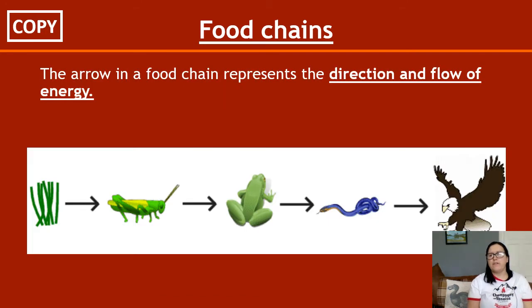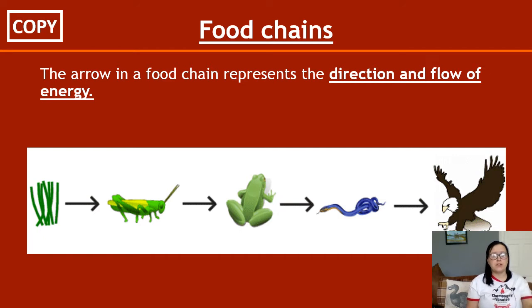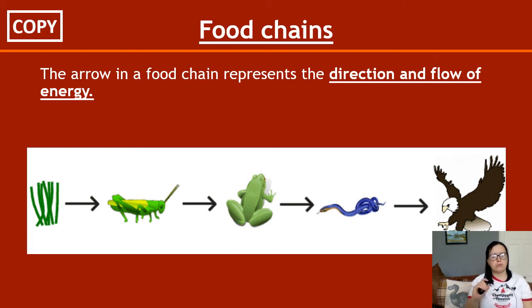The arrows in a food chain do not represent what eats what — they represent the direction and flow of energy. So we've got our producer, which is the grass, and the energy flows to the grasshopper, then to the frog, then to the snake. The grass is the producer; the grasshopper, frog, snake, and hawk are all consumers. You just need to know the difference between a producer and a consumer.